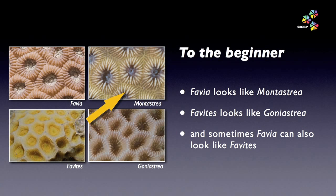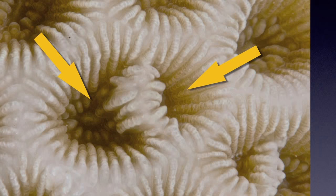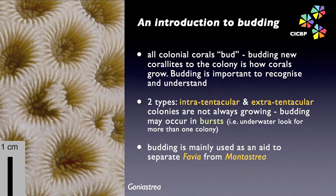Here's the problem. To the beginner, Fabia looks like Montastria, and Fabiates looks like Goniastria. Sometimes Fabia can also look like Fabiates. These genera are very common and are generally easily separated once you know how. Solving this learning group requires some new terms related to the way the coral clones itself — a process known as budding. All colonial corals bud or clone new polyps and their coralites to grow and expand the colony. We don't generally take notice of budding in the coral identification process, except when trying to separate Fabia and Montastria.